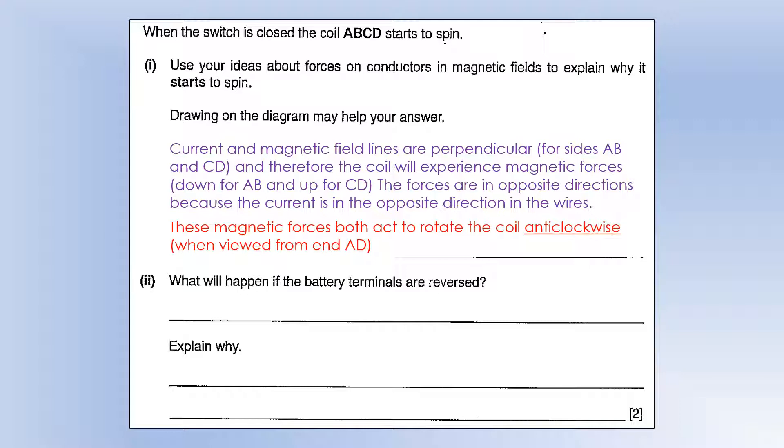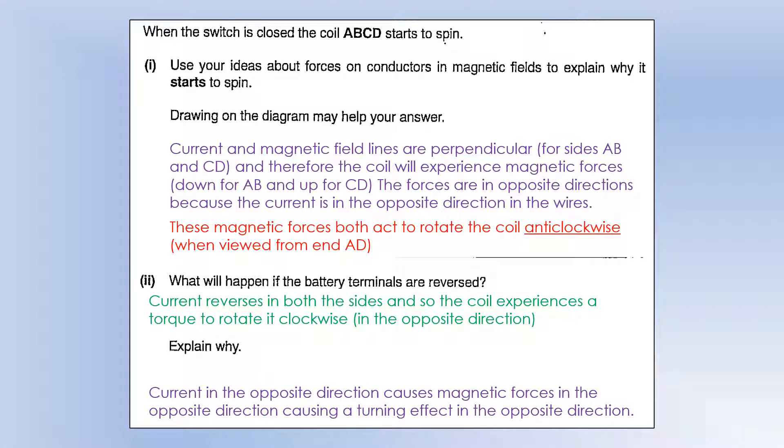What would happen if the terminal is reversed? Well, it's going to rotate clockwise or rotate in the opposite direction because we've changed the direction of the torque by changing the direction of the forces. So if you get current in the opposite direction, the magnetic force is in the opposite direction. And that produces torque in the opposite direction.